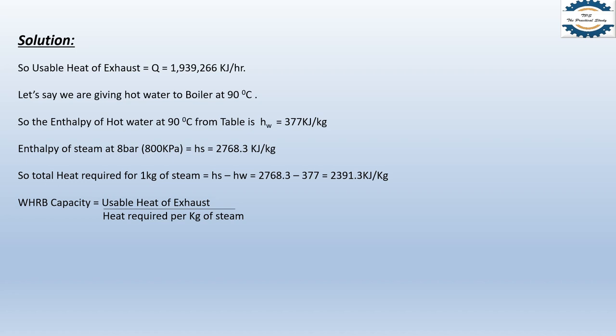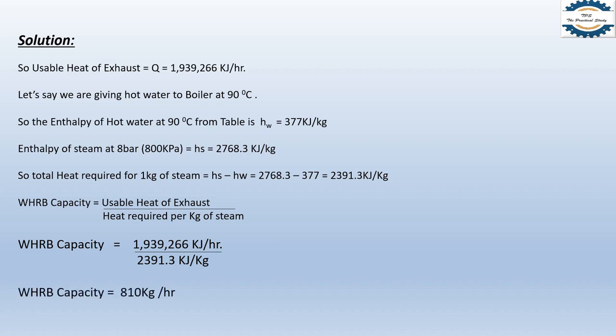The waste heat recovery boiler capacity is found by dividing the usable heat of exhaust by the heat required per kg of steam: 1,939,266 ÷ 2391.3 = 810 kg per hour. In other words, by installing a waste heat recovery boiler on the exhaust of a 1 megawatt gas generator, you will get 810 kg per hour of steam — or 0.810 tonnes per hour of steam.